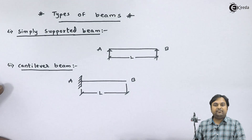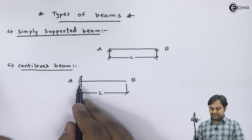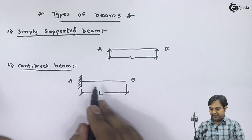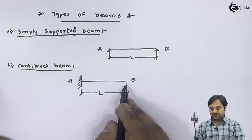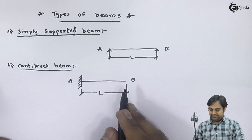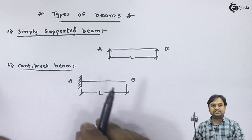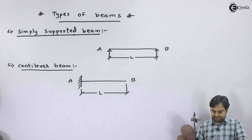If we have a beam which is fixed at one end and free at the other end, that beam is called a cantilever beam.